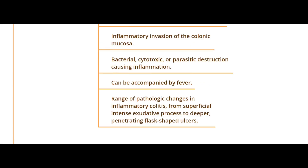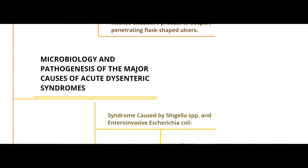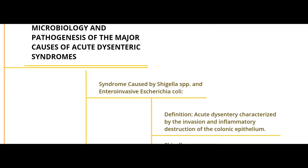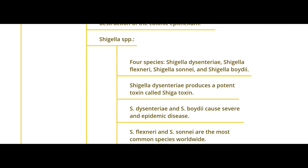Regarding microbiology and pathogenesis of the major causes of acute dysentery syndromes: we start with syndromes caused by Shigella species and enteroinvasive E. coli (EIEC). Acute dysentery is characterized by invasion and inflammatory destruction of the colonic epithelium — usually stopping at the mucus level. There are four Shigella species: Shigella dysenteriae, which is the most common, and the others — flexneri, sonnei, and boydii.